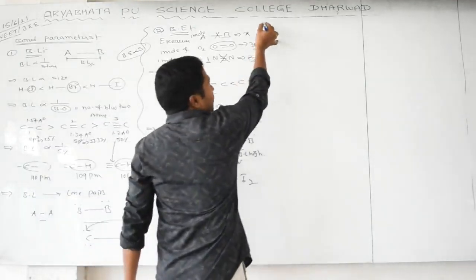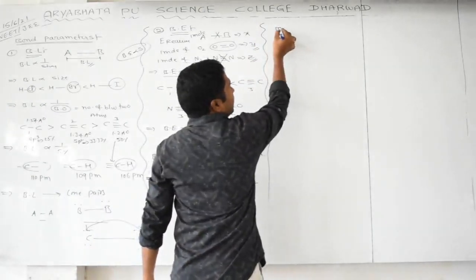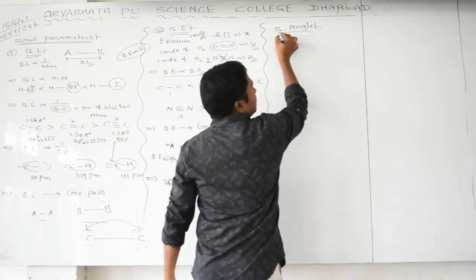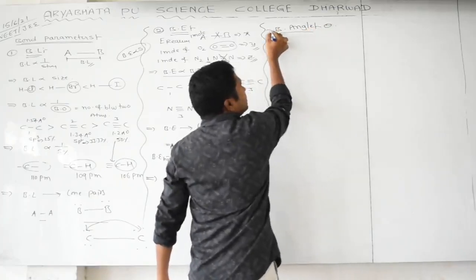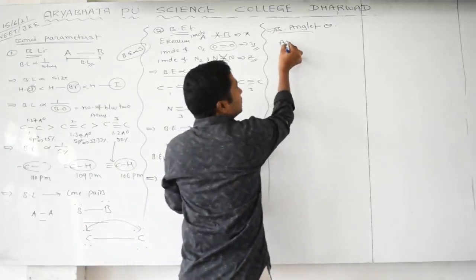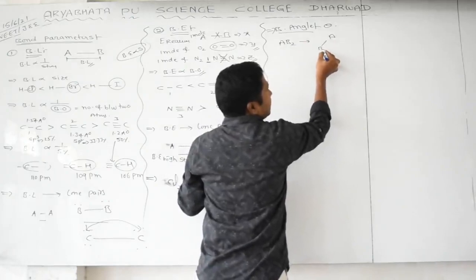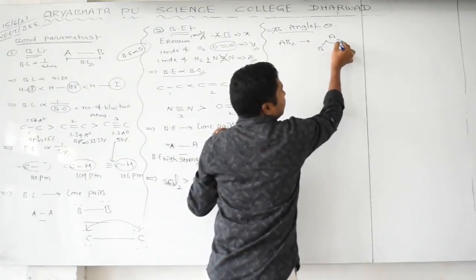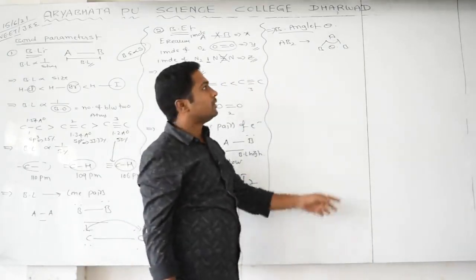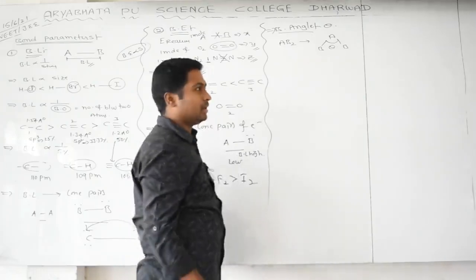The third bond parameter is bond angle, denoted by θ. Bond angle is defined as the angle between two adjacent bonds around the central atom. For example, in an AB₂ molecule, A is the central atom surrounded by two B atoms, and the angle between them is the bond angle.